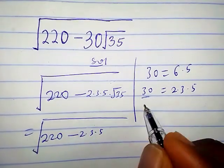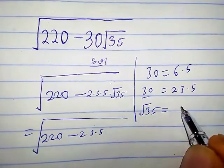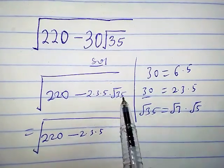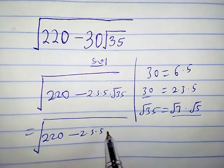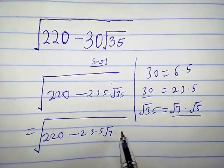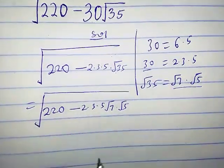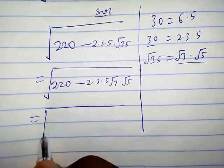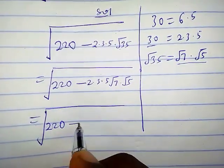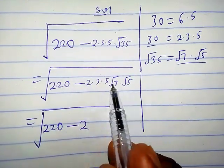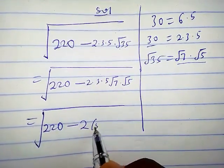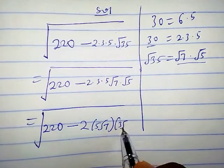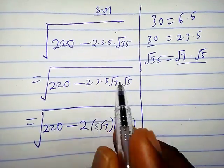We can also write square root of 35 as square root of 7 times square root of 5. So we replace square root of 35 with square root of 7 times square root of 5. This gives us square root of 220 minus 2 times 5 times square root of 7 times 3 times square root of 5. Nothing has changed — we just rearranged the terms.